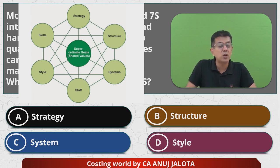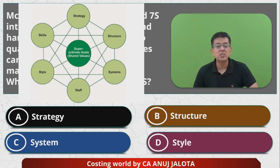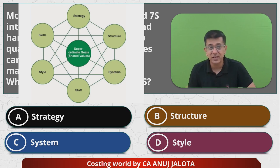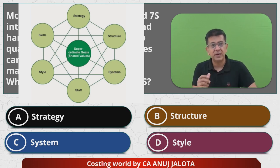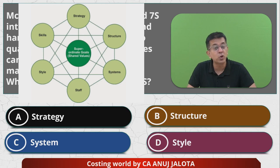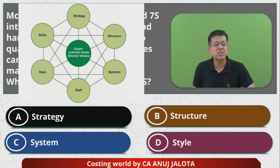The remaining four things are called Soft S — they are difficult to see and can only be felt. For example, what skills your staff has, what is the style of the organization — is it autocratic, bureaucratic, or democratic? Skills are difficult to quantify. Apart from that, the values of an organization — are you ethical? To what extent can you go for your business? Do you operate within the legal framework? These things are difficult to quantify and can only be felt.